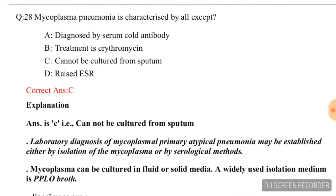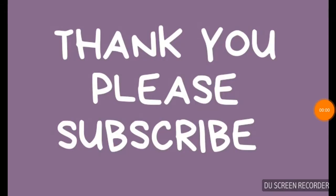Next question: mycoplasma pneumonia is characterized by all except — A) diagnosed by serum cold agglutinin antibody, B) treatment is erythromycin, C) cannot be cultured from specimen, D) raised ESR. The correct answer was not fully stated before the video ended.